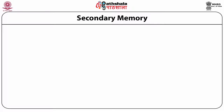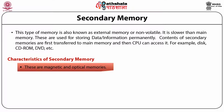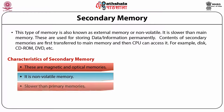Coming to the secondary memory. This type of memory is also known as external memory or non-volatile or permanent storage. It is slower than main memory but these are used for storing the data or information permanently. The contents of the secondary memories are transferred to the main memory and the CPU can access it. A typical example of secondary memory is the disk, CD-ROM, DVD or the hard disk. The characteristics of the secondary memory are that these are magnetic or optical memories and it is a non-volatile memory but it is slower than primary memory.